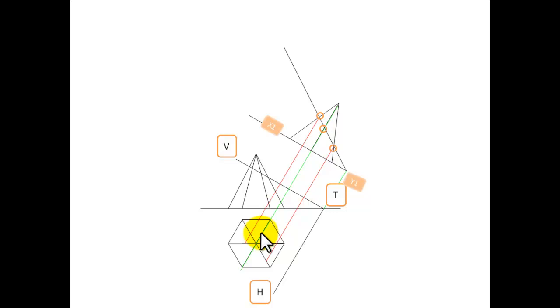What does the auxiliary elevation give us? It gives us points where it crosses Y1, but it also gives us height. So we have to transfer this height to our elevation.